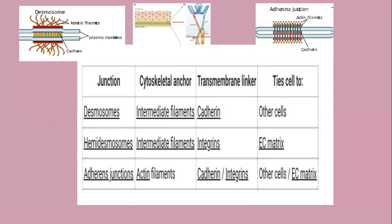Next, hemidesmosomes are mostly found in epithelial cells. Epithelial cells lie on a basement membrane, and hemidesmosomes connect these epithelial cells with the extracellular matrix. Like desmosomes, they use two kinds of anchors: the cytoskeletal anchor is the intermediate filament, and the transmembrane link is integrins. So integrins, using intermediate filaments, connect one cell to the extracellular matrix.